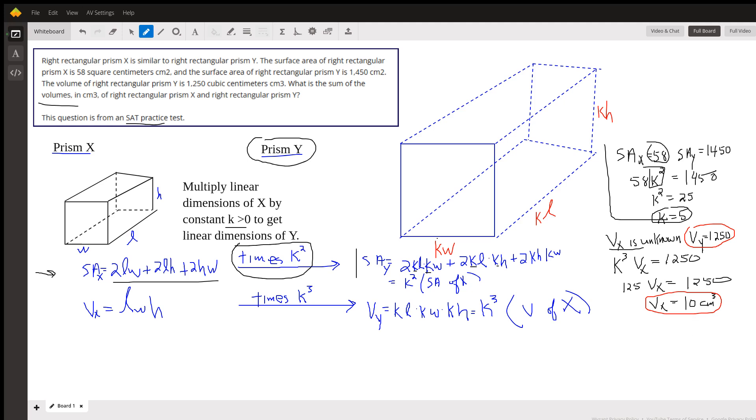The problem asks for the sum of those two volumes. So we have to add the 1250 and the 10. And that indeed does give us 1260 cubic centimeters. Okay. There you go. Hope that helped. If you have any questions, post, comment.